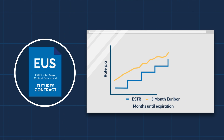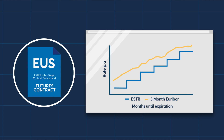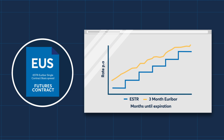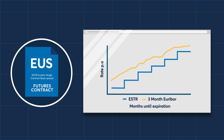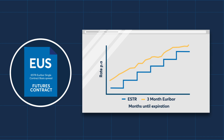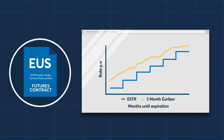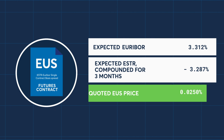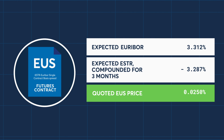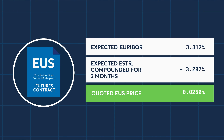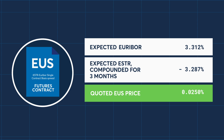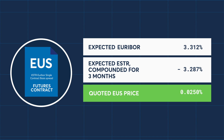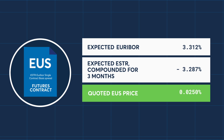The Ester single contract basis spread future is designed to represent the market expectations of the difference between the 3-Month EURIBOR benchmark and the expected value of a realized in-arrears rate, in this case Ester. The quoted price represents the 3-Month EURIBOR benchmark rate minus the expected 3-Month compounded Ester rate.